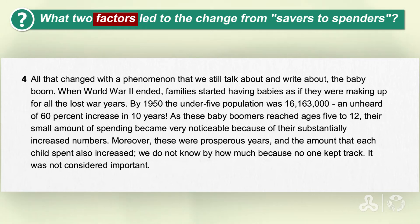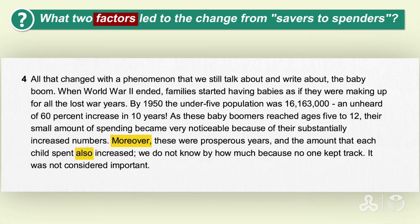Because we know we're looking for two factors, it's very worthwhile to pay attention to words that give us a list within a text — words like 'moreover' (יתרה מכך) and words like 'also'. If you're not even sure what the answer is, but you see words like these, you know that you have more than one item. 'Moreover' tells me that if I'm looking for two factors, there was definitely a factor before.